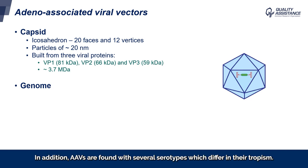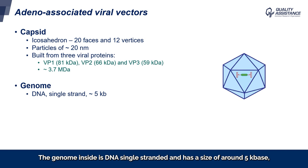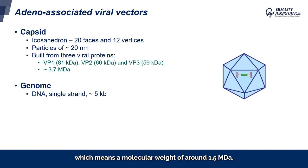In addition, AAVs are found with several serotypes, which differ in the tropism. The genome inside is DNA, single-stranded, and has a size of around 5 kilobases, which means a molecular weight of around 1.5 megadalton.